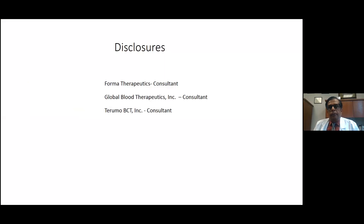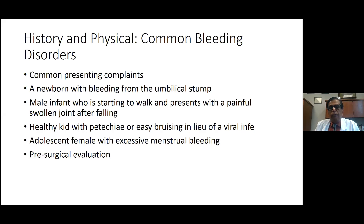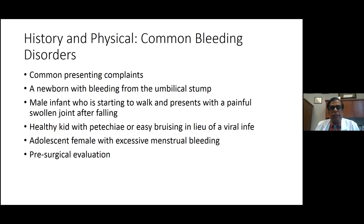These are my disclosures as Dr. McDonald alluded to. Let us talk about the common presentations we see in children with bleeding disorders. We could see a newborn with bleeding from the umbilical stump or post-circumcision bleeding. It could be a male infant who is starting to walk and presents with a painful swollen joint after falling. Or it could be an otherwise healthy child with petechiae and easy bruising following a viral infection, or an adolescent female presenting with excessive menstrual bleeding. Many times we get referrals from ENT specialists for pre-surgical evaluation because coagulation studies have found elevated PTT.